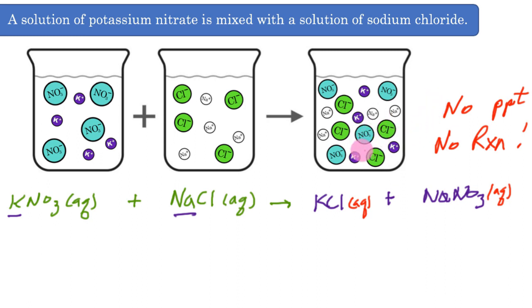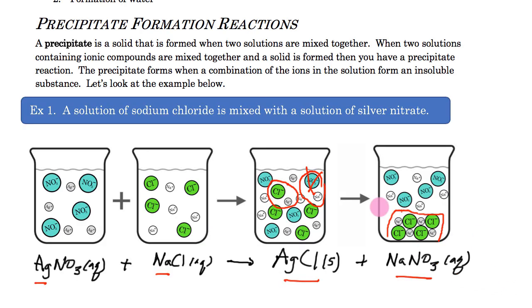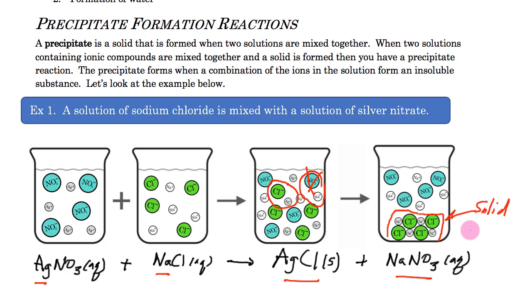We use the solubility rules to find a way to get those ions removed from solution. Going back to the previous example: notice there were silver ions and chloride ions floating around in the solution before the reaction. When the reaction occurs, those ions are no longer in the solution — they're pulled out of the water because now they're in a solid phase, turned into a solid as they precipitate out.